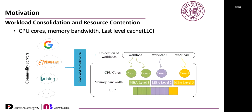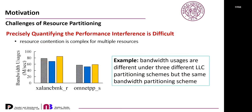Workload consolidation is a commonly used approach for improving resource utilization in modern data centers. However, co-located workloads often suffer from significant performance degradation due to resource contention on shared resources such as CPU cores, memory bandwidth, and last-level cache. If the resources can be partitioned among the co-located applications, performance interference will disappear. However, the resource partitioning problem faces several critical challenges.